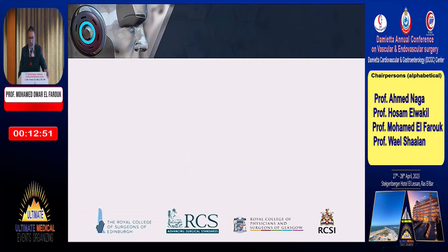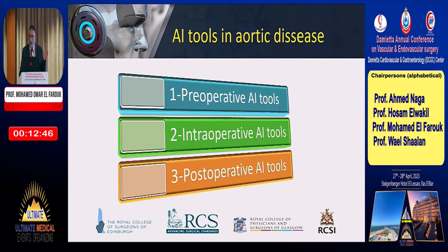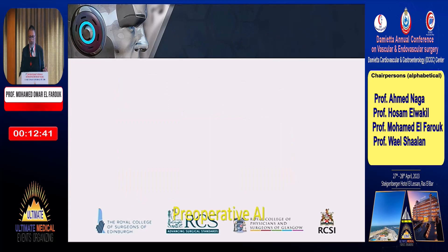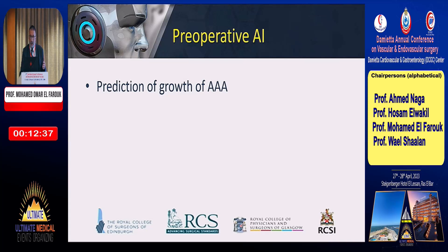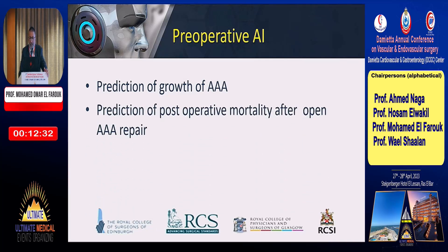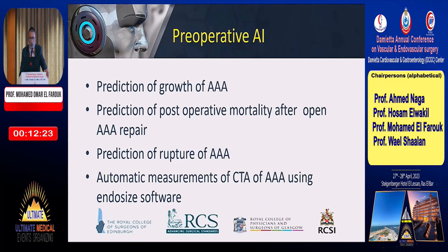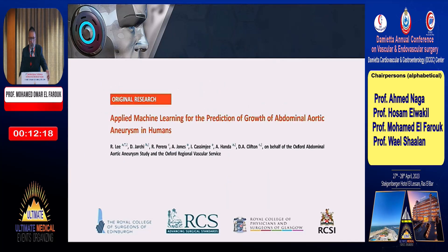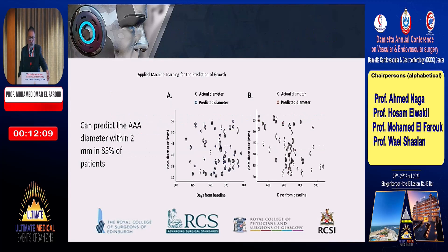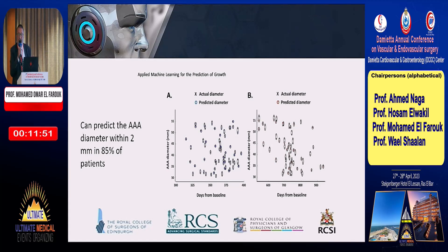I've divided AI in aorta into three steps: pre-operative, intra-operative, and post-operative. Pre-operatively, can we predict the growth of aortic aneurysm? Can we predict post-operative mortality of open repair? Can we predict rupture of aortic aneurysm? And can we perform automatic measurement of aortic aneurysm? Machine learning has developed a program that can predict the growth of aortic aneurysm. Here in this graph, this is the actual growth compared to the predicted growth. This program can predict the growth of aortic aneurysm to the nearest two millimeters, and it is already found in vascular units.